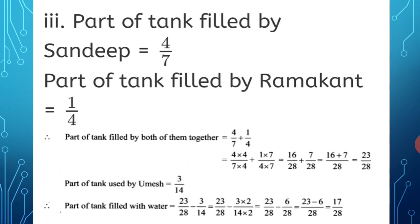Part used by Umesh = 3 upon 14. Since 'used' means subtracted from what was filled, the remaining part = 23 upon 28 minus 3 upon 14. To equalize denominators, multiply 3 upon 14 by 2 to get 6 upon 28. So 23 upon 28 minus 6 upon 28.